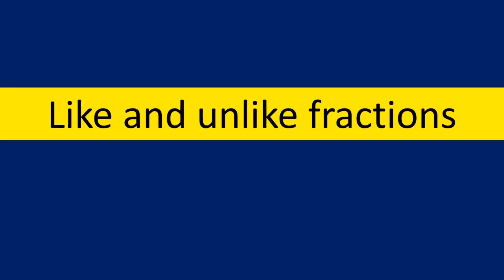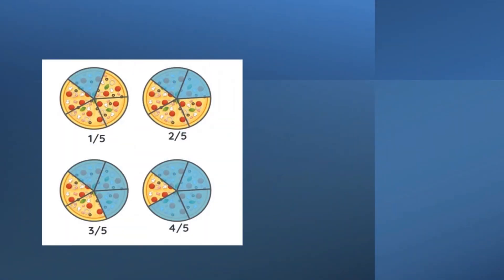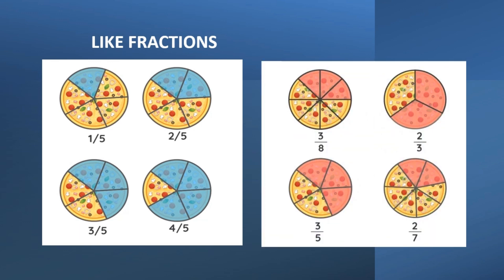Like and unlike fractions: in like fractions, the numerators are different but the denominators are the same. These fractions are called like fractions. In unlike fractions, all the denominators are different — these are called unlike fractions.